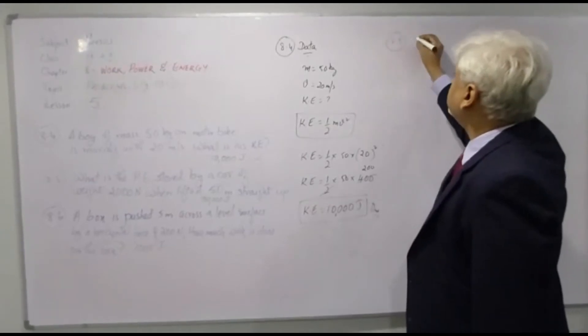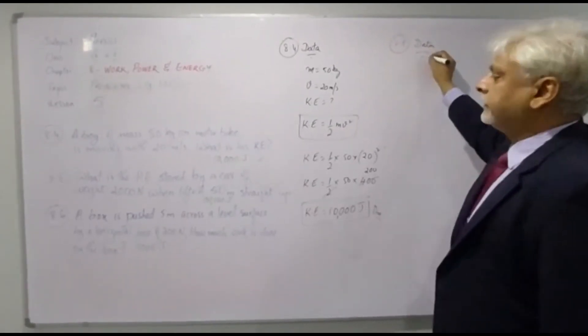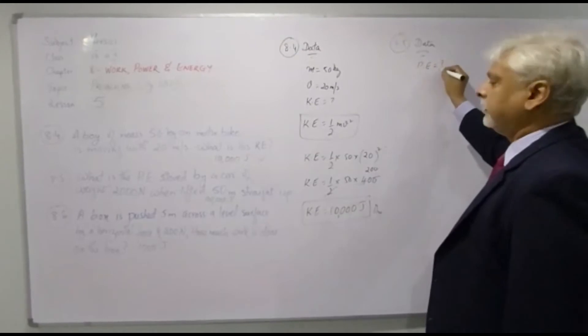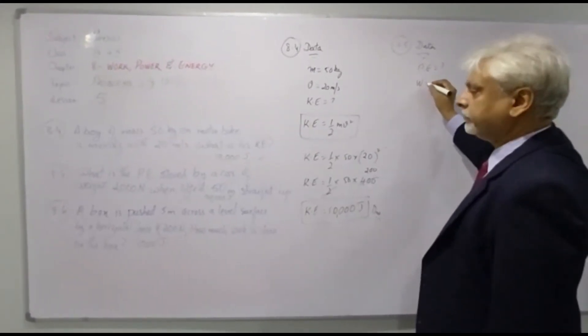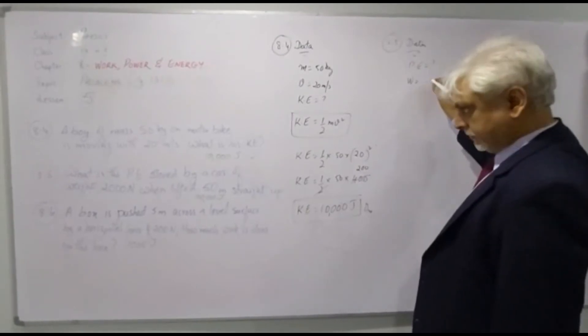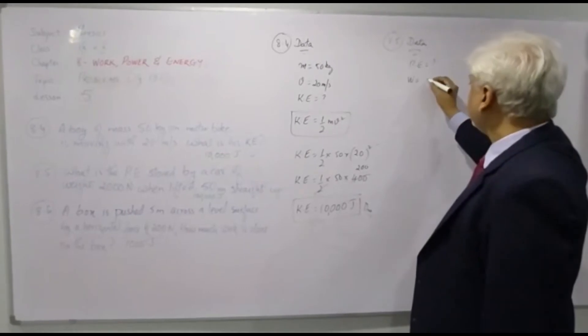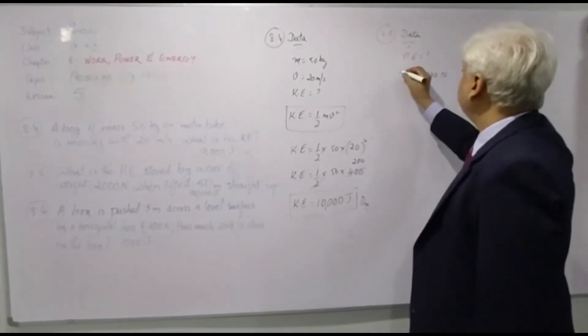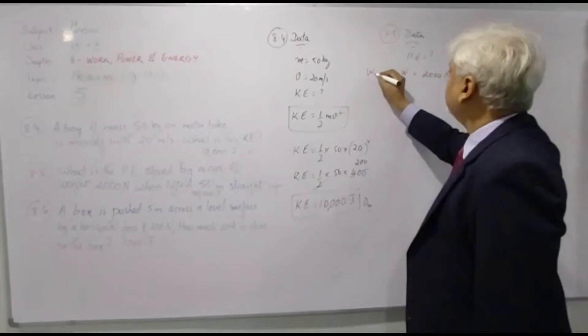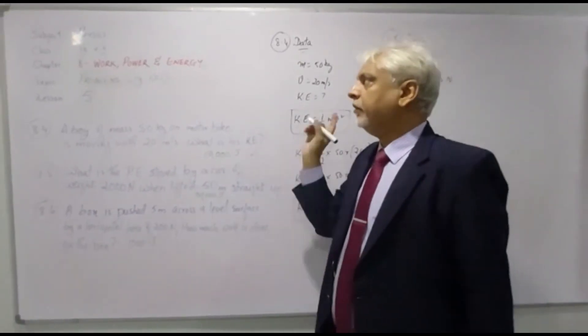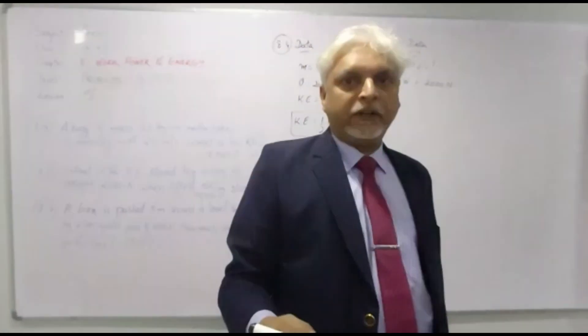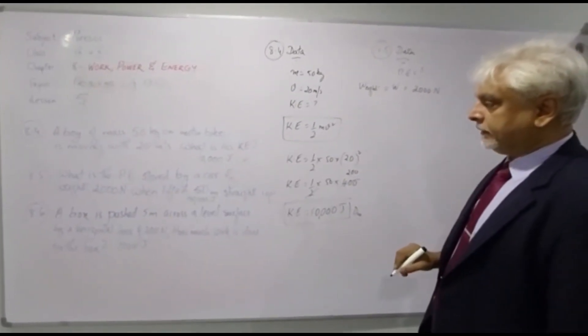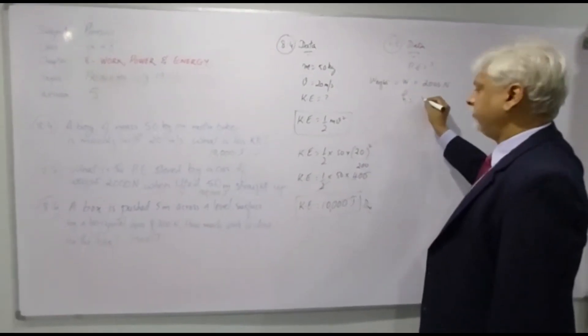Let's move on to 8.5, the next question. Now it says here, what is the potential energy stored by the car? Potential energy is what you need to find stored by a car of weight W equals 2000 Newton. This is the weight, I just put W-E-I-G-H-T over here in order to avoid confusion between weight and work. We are using the same symbol for weight and work so just making sure that W is the weight, 2000 Newton, when lifted 50 meters straight up. The height is 50 meters.